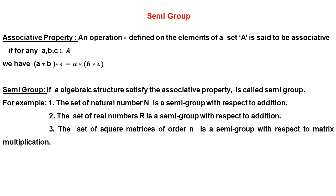Now, what is associative property? An operation star defined on the elements of a set A is said to be associative if for any three elements a, b, c belonging to A, we have (a * b) * c = a * (b * c). We use the associative property in semi-groups. If an algebraic structure satisfies the associative property, it is called a semi-group.